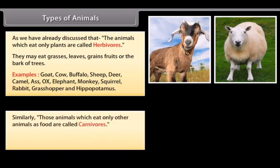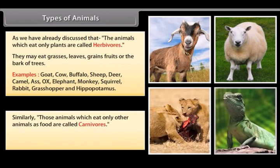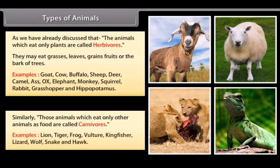Those animals which eat only other animals as food are called carnivorous. Examples include lion, tiger, frog, vulture, kingfisher, lizard, wolf, snake and hawk.